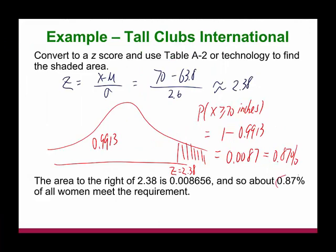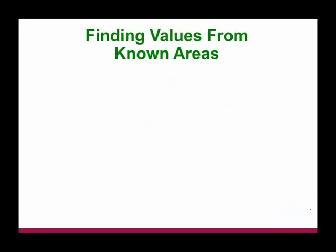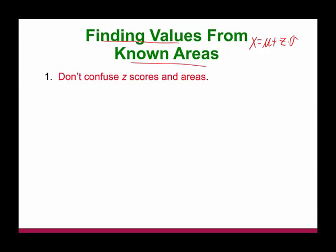So we find that out of 10,000 women, only about 87 will meet the requirement. That's what the 0.87% indicates — it's a very low probability, highly unlikely. Sometimes we may have to go backwards: if you know the probability, then we need to find out the corresponding x values from a known area. Going backwards, we use x equals mu plus z times sigma, a formula we derived on an earlier slide. So first of all, don't confuse z-score and area — the z-score is used to find area, but they are not the same.